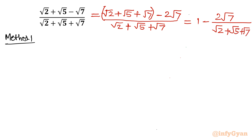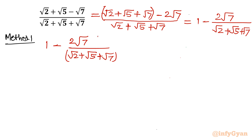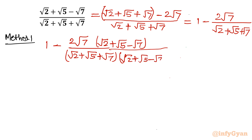Now I will take the help of rationalization. So we have 1 minus 2 root 7 divided by root 2 plus root 5 plus root 7. I will multiply numerator and denominator by square root 2 plus square root 5 minus square root 7. You can see in the denominator it is in the form A plus B times A minus B, which is the difference of squares formula.